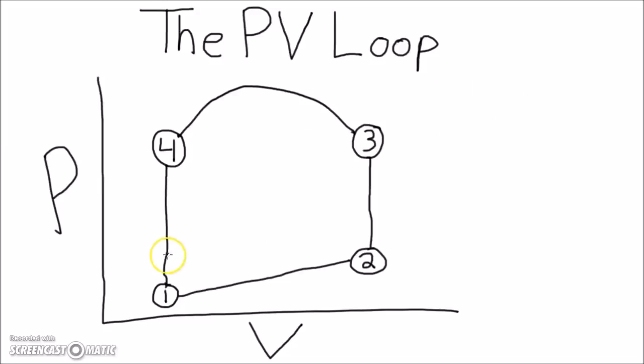So what's going on here? The PV loop runs in a counterclockwise direction. On the top, there is the systolic phase of the heartbeat. On the bottom, there is the diastolic phase.